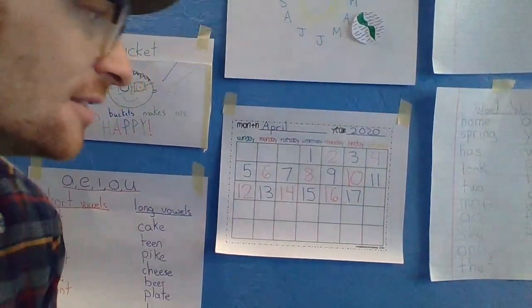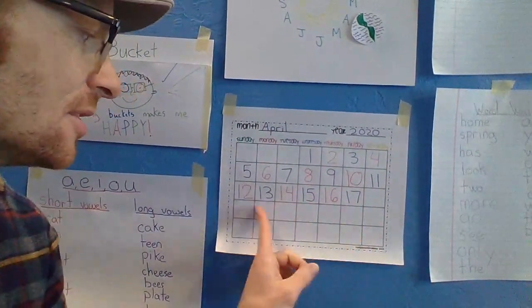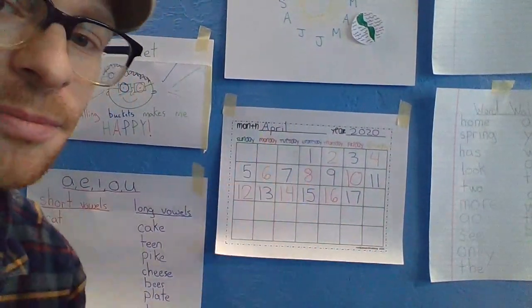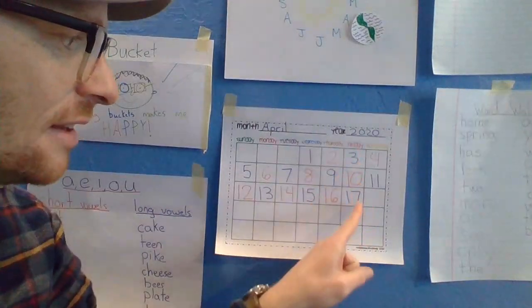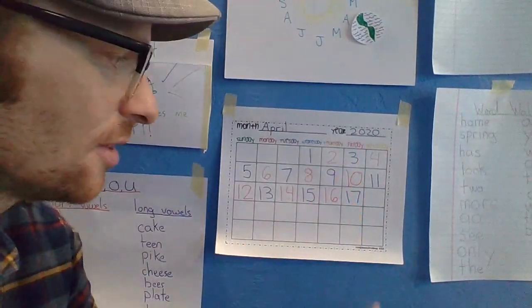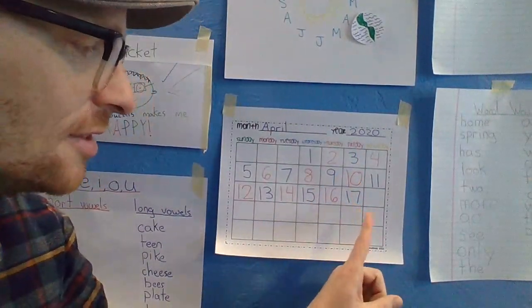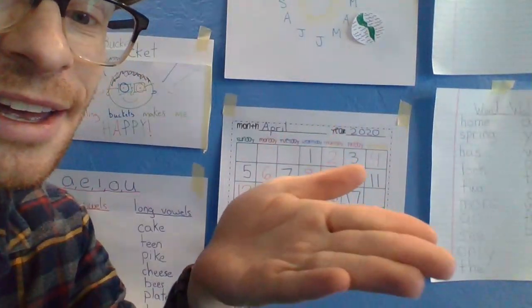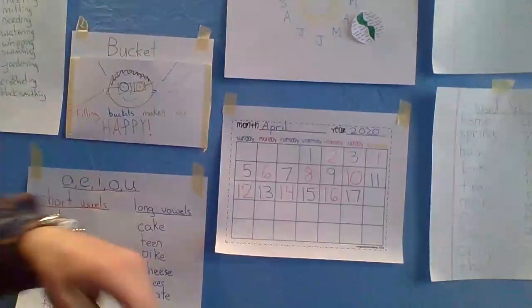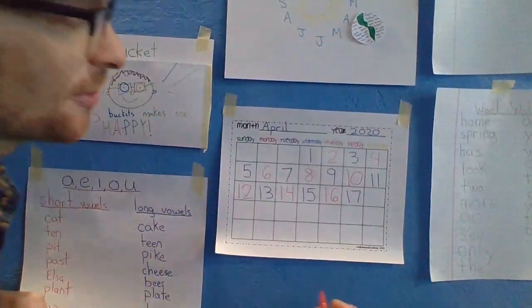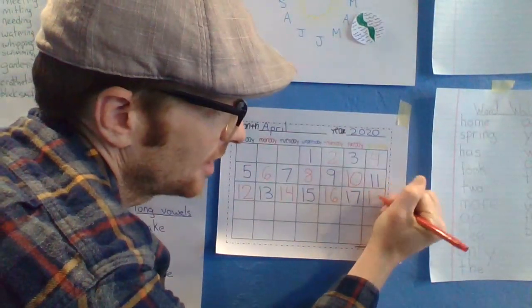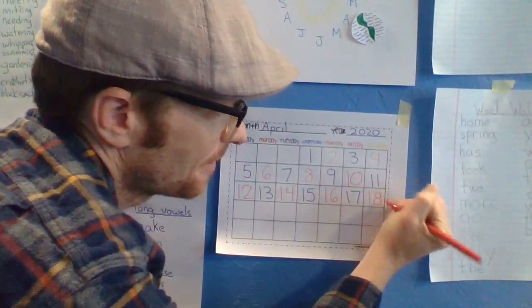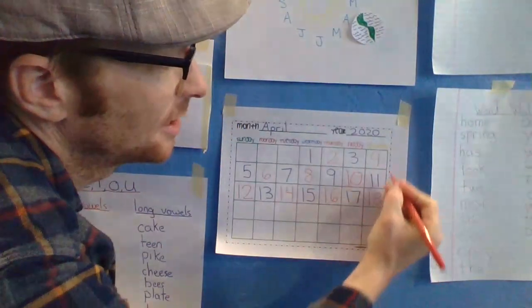And today is Monday. So we've got to fill in numbers until we reach Monday. The last time we were here was Friday the 17th. So the next number after 17 is 18. And if I'm doing my pattern still, after blue will be red. So 18, and the 18th was on a Saturday.